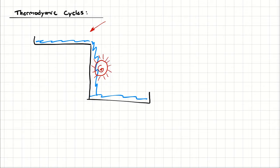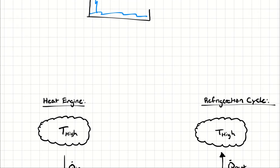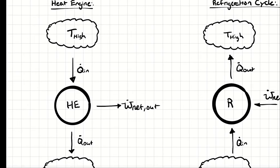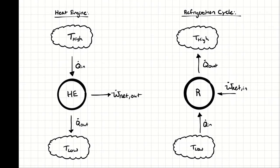In that analogy, heat is water and elevation is temperature. When we talk about taking a high temperature and allowing it to transfer heat to a lower temperature, which happens for free from our perspective, we can generate work from it. That thermodynamic cycle is called a heat engine. It taps into naturally occurring heat transfer — heat transfer that happens for free from our perspective — and produces work.